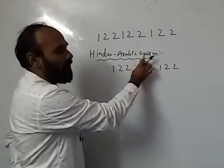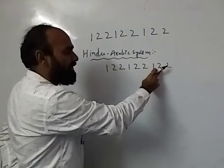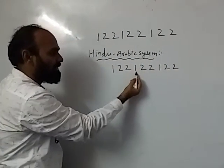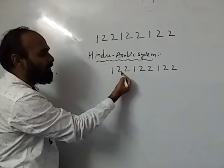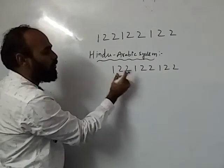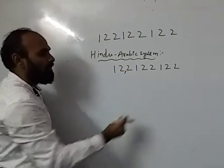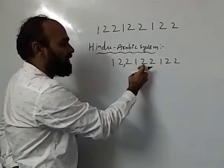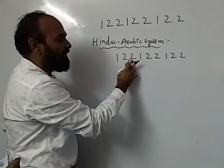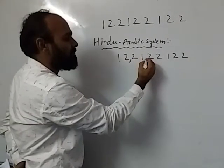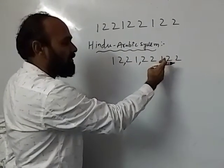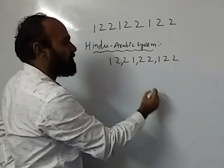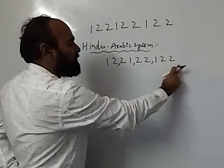In the Hindu-Arabic System, count the place values: ones, tens, hundreds, thousands, ten thousands, lakhs, ten lakhs, crores, ten crores. Ten crores means take two digits — place a comma. Then again: ones, tens, hundreds, thousands, ten thousands, lakhs, ten lakhs — two digits, comma. Then ones, tens, hundreds, thousands, ten thousands — three digits remain.